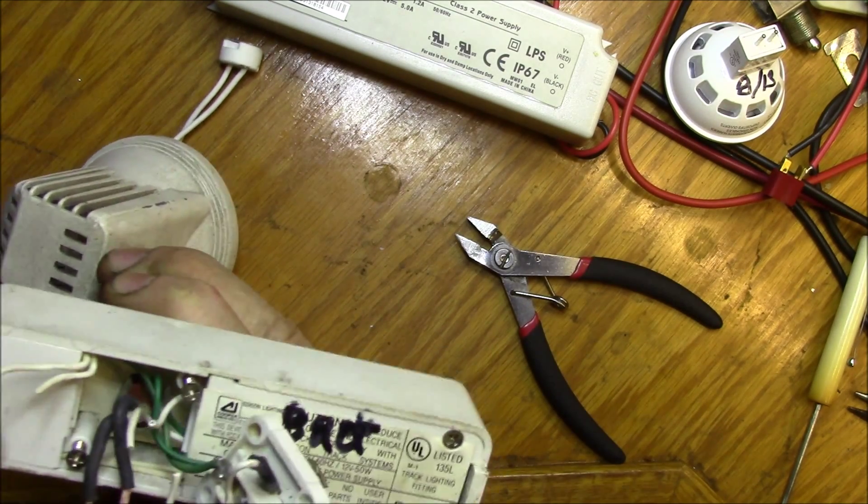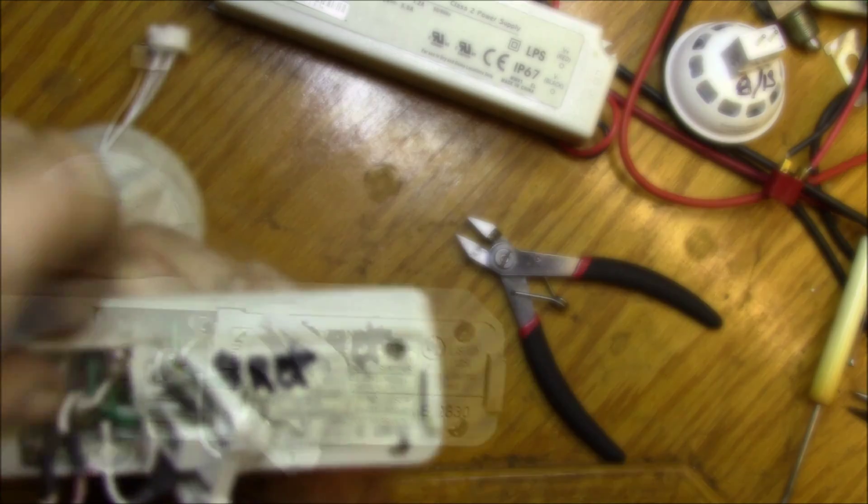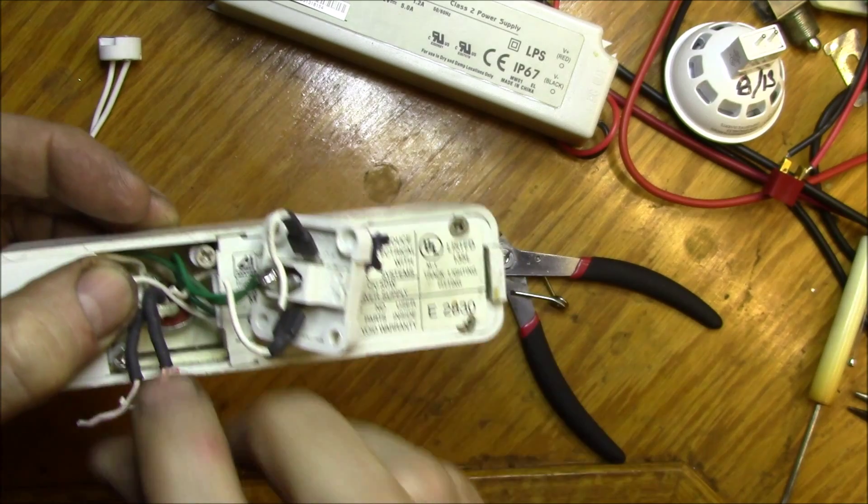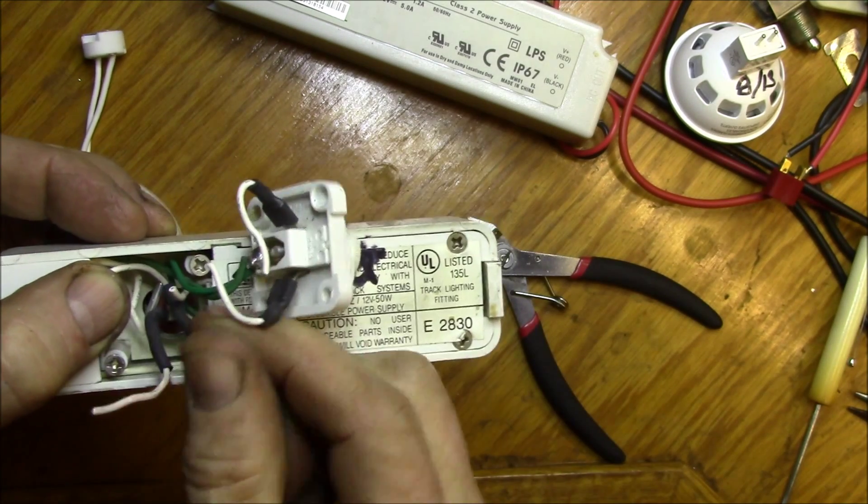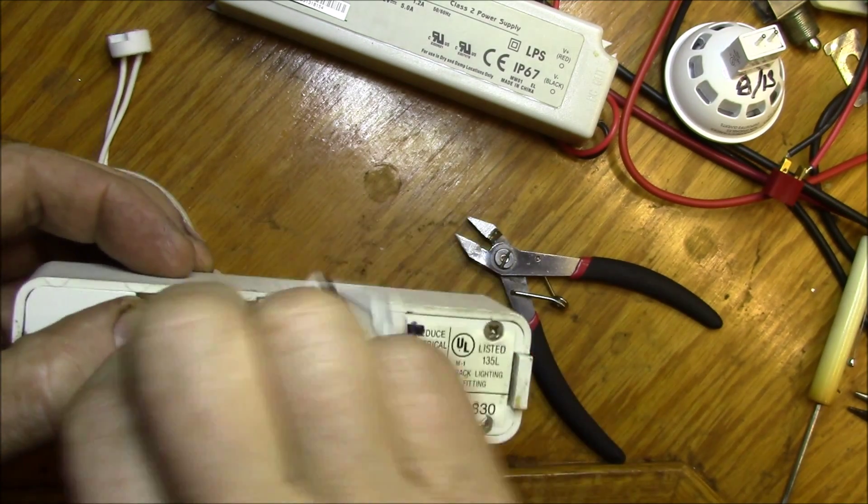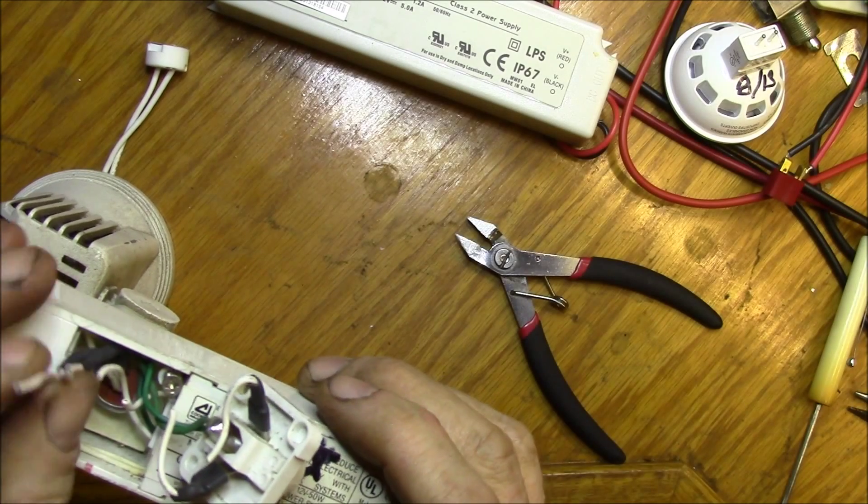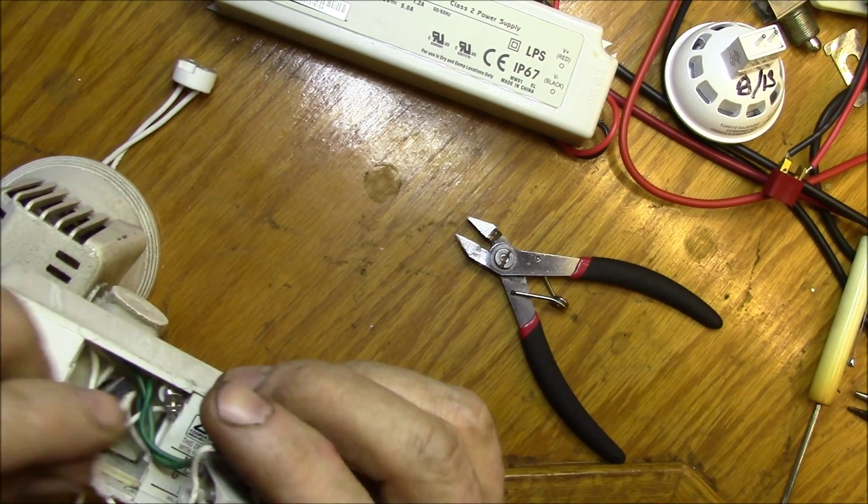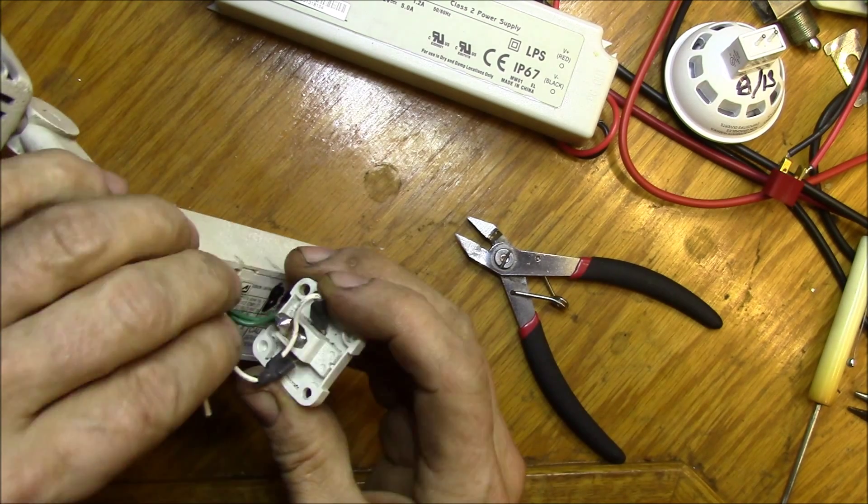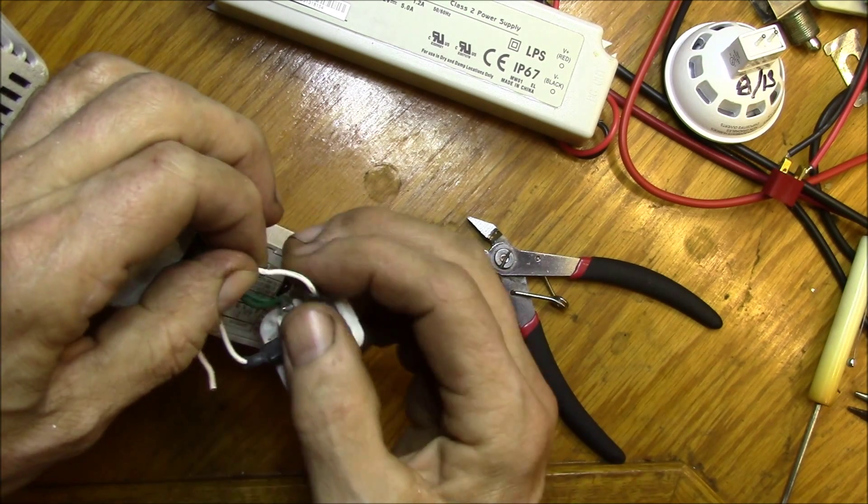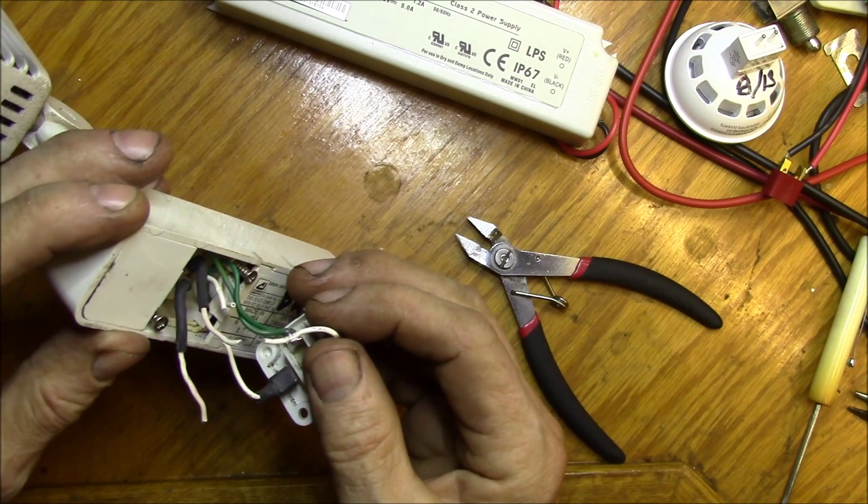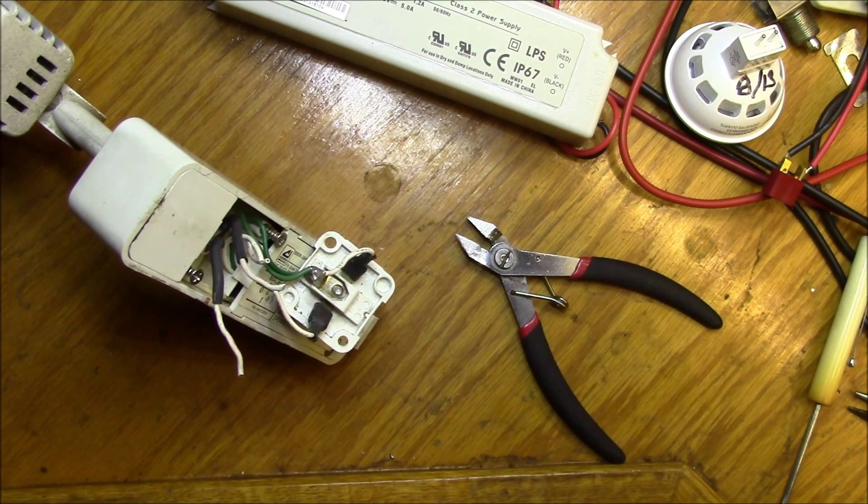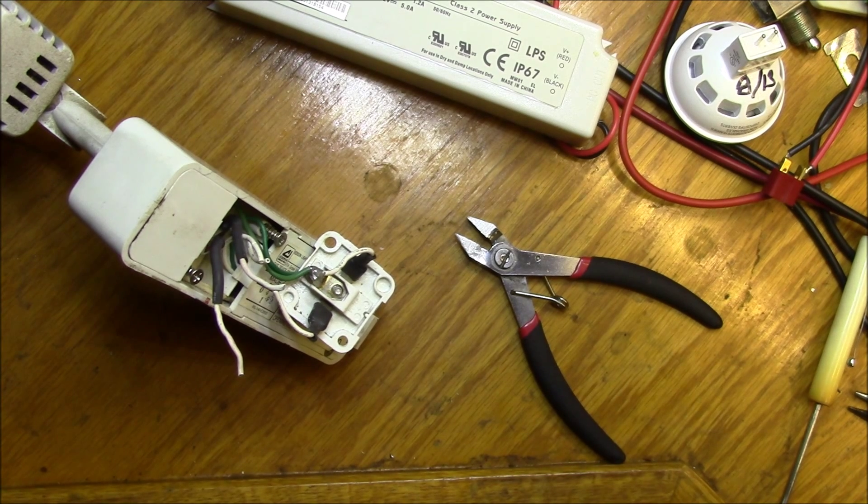You just find the two wires that come off of the track head and two that go down the tube to the light bulb, and you pick one of each and hook them together. That's how you do it. I'll get these soldered and heat shrunk and they'll be ready to go. That's all you need to do to fix one of these. I'll show you what it looks like when I get done here.